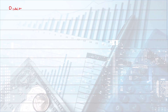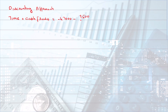In the discounting approach, we find the value of all cash outflows at time zero, while any cash inflows remain at the time at which they occur. Discounting the cash outflows to time zero, we find: 47,000 initial investment plus 9,500 cash outflow at the end of the project divided by 1.10 raised to power 5, giving minus 52,898.8.